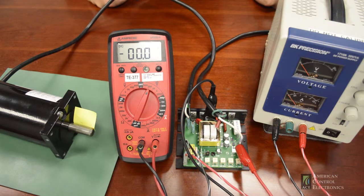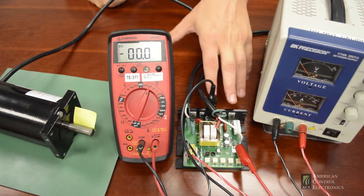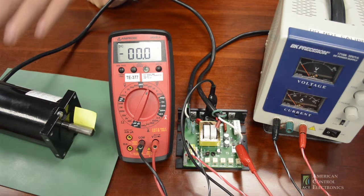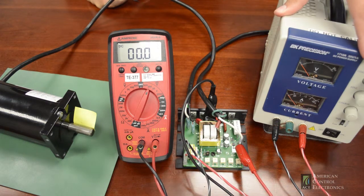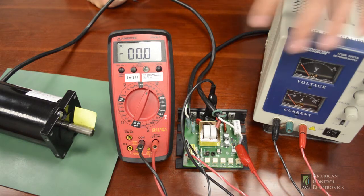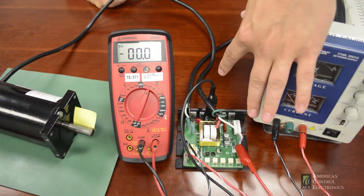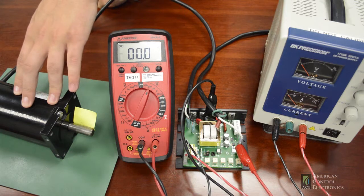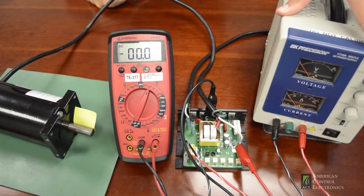The signal adjust trim pot adjusts the maximum voltage the drive will output to the motor when applying your maximum voltage input signal. To calibrate the trim pot we must read across A1 and A2 the voltage the drive is outputting to the motor and we must apply our maximum voltage input signal.